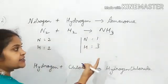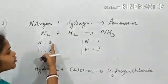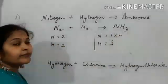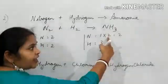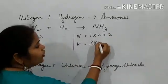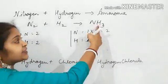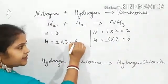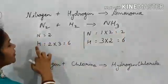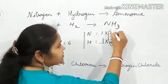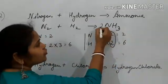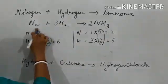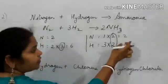The number of atoms on the left and right are different. Starting with nitrogen: 2 on the left and 1 on the right, so I multiply NH3 on the right with 2, giving 2 atoms of nitrogen. Since nitrogen and hydrogen are in the same compound, hydrogen also gets multiplied automatically, becoming 6. I then multiply H2 on the left with 3, giving 6 atoms of hydrogen. Now nitrogen is 2 on both sides and hydrogen is 6 on both sides. So 2 is the coefficient for NH3 and 3 is the coefficient for H2. The equation N2 + 3H2 → 2NH3 is now balanced.